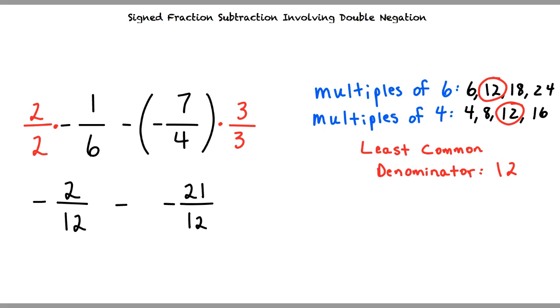Yes. Subtracting a negative is the same as adding a positive. So we can rewrite our expression as negative 2 over 12 plus a positive 21 over 12.